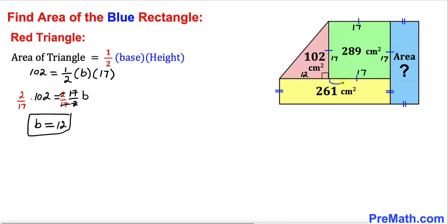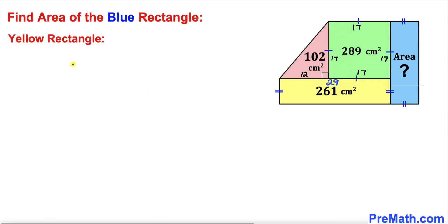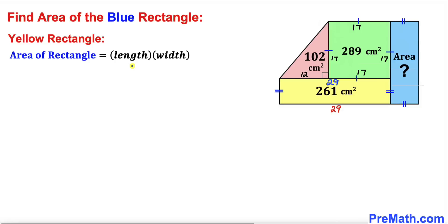So this base turns out to be 12 centimeters. We can see that one side length is 17 centimeters and the other is 12 centimeters, so the total length is 12 plus 17, which equals 29 centimeters. Now let's focus on the yellow rectangle. This side of the yellow rectangle is 29 centimeters, and since we are dealing with a rectangle, the opposite side is 29 centimeters as well. The area of this rectangle has been given to us as 261.